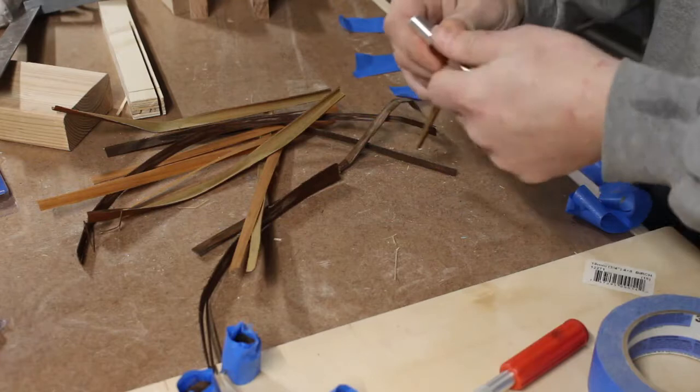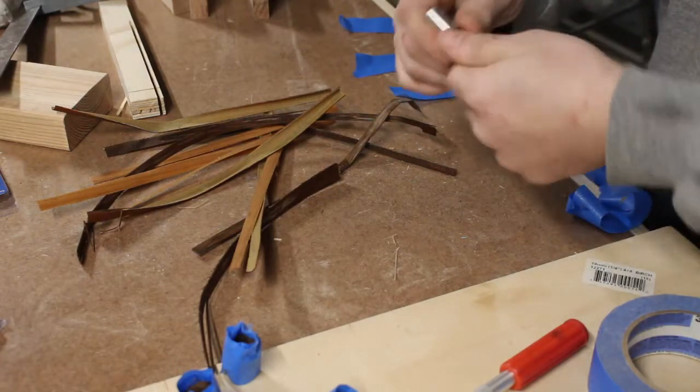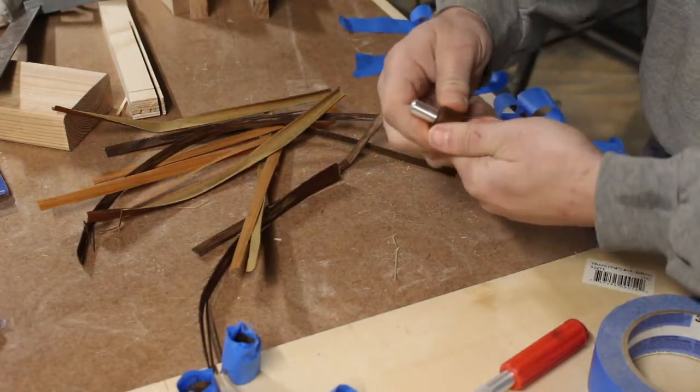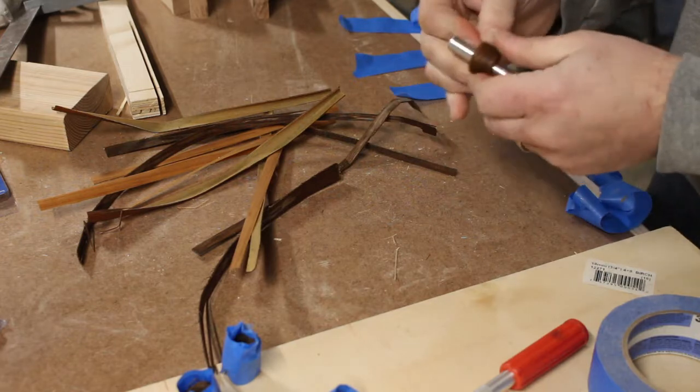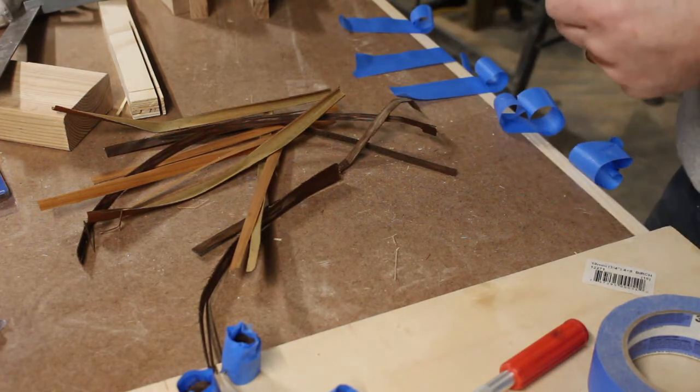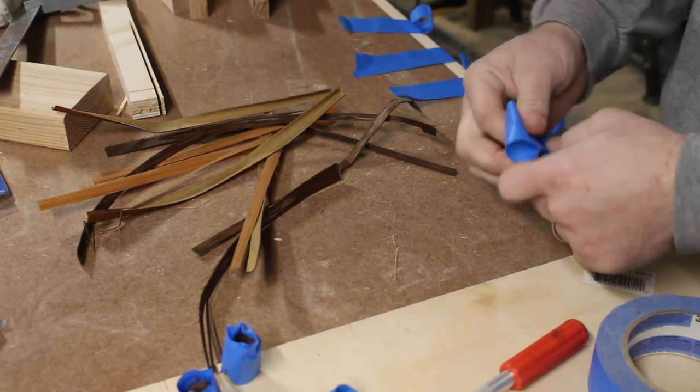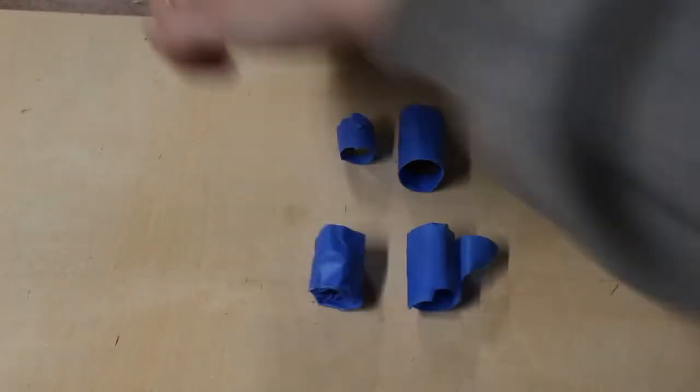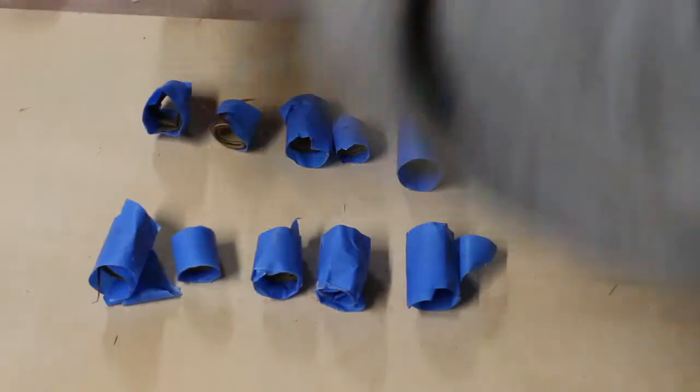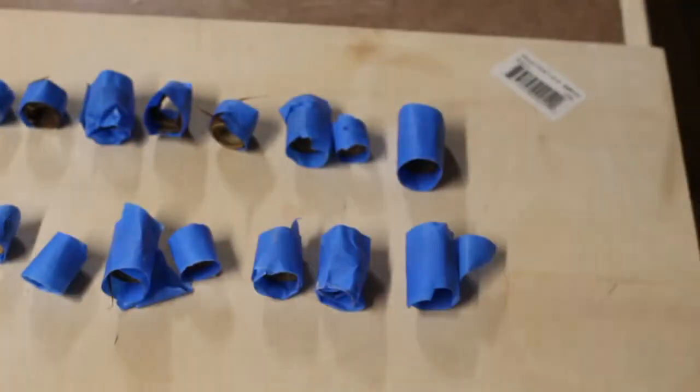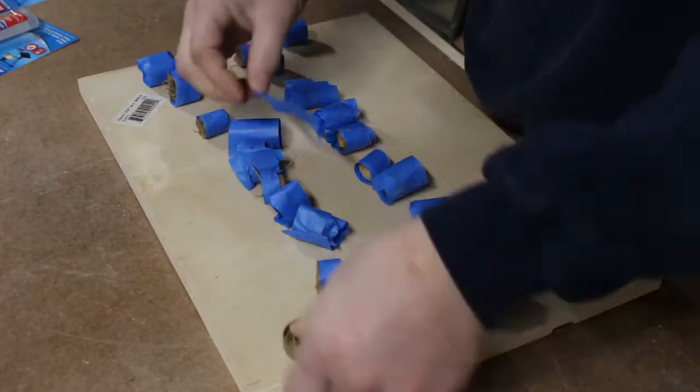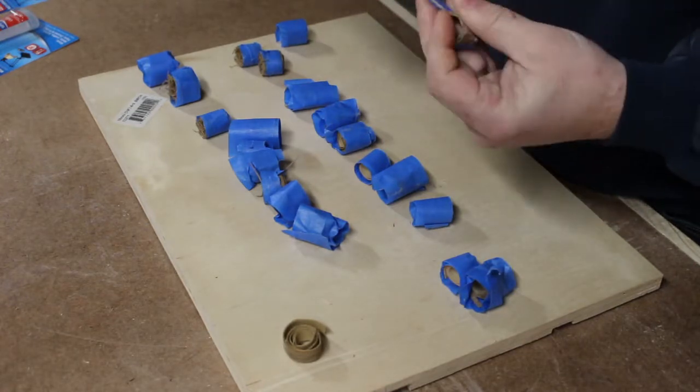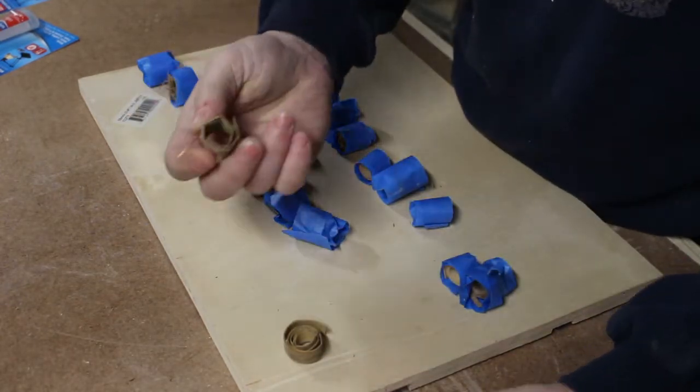Once you remove it from the water, you want to wrap them around something round and then tape them. I just used the handle of one of my craft knives. Let these sit overnight until they dry, and then you can untape them. See all the cool coils you've made.